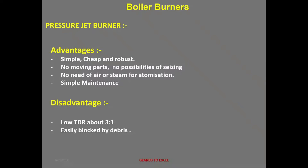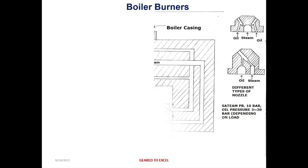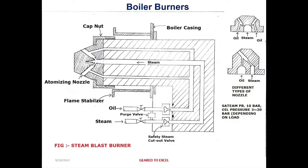The cross-sectional drawing for the steam blast burner shows the cap nut, boiler casing, atomizing nozzle, flame stabilizer, oil inlet port, steam inlet port, purging wall between these two ports, and a steam safety cutout valve. Various types of nozzles are shown — the waste type and the tangential type at the bottom.